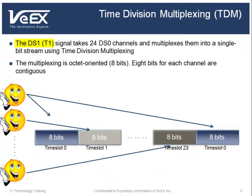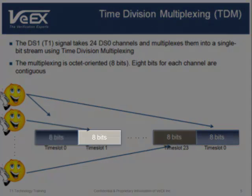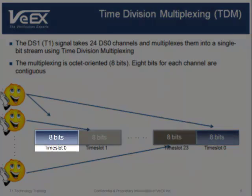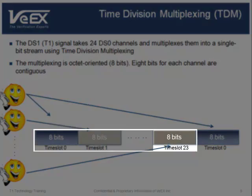The DS1 signal takes 24 of the DS0 channels and uses time division multiplexing, or TDM, to multiplex them into a single-bit stream. Each of the DS0 channels is transmitted 8 bits at a time on a single-bit stream. The multiplexing is octet-oriented, and 8 bits for each channel are contiguous. Each channel is also called a time slot. A T1 carries 24 DS0 channels, so it multiplexes time slot 0 through time slot 23.